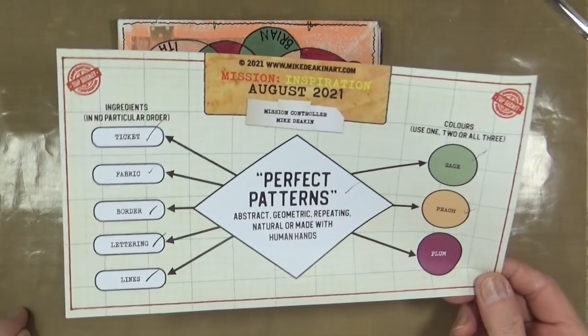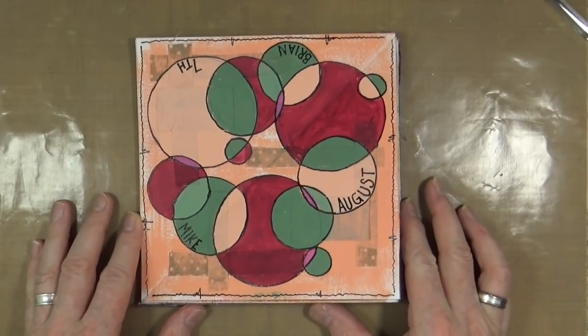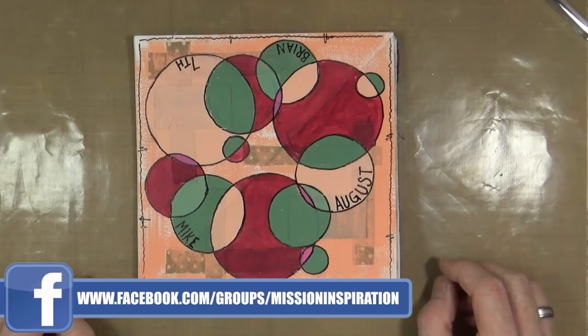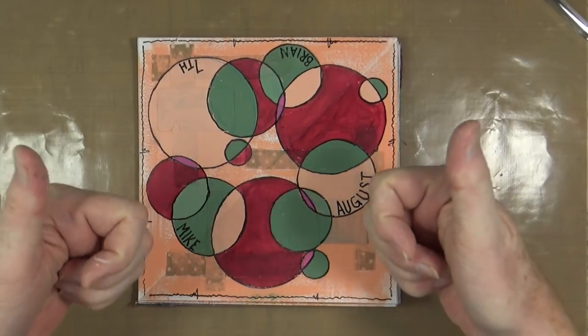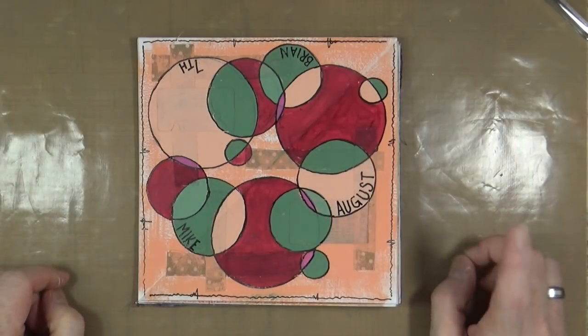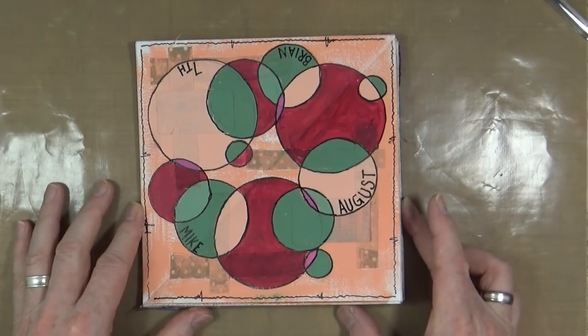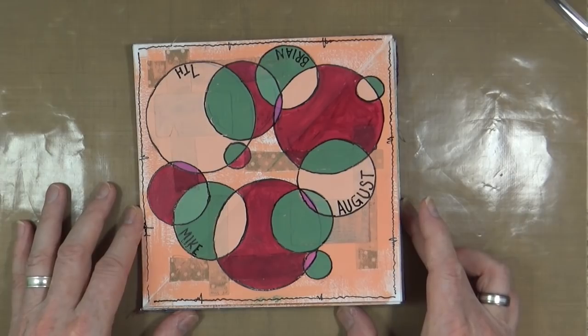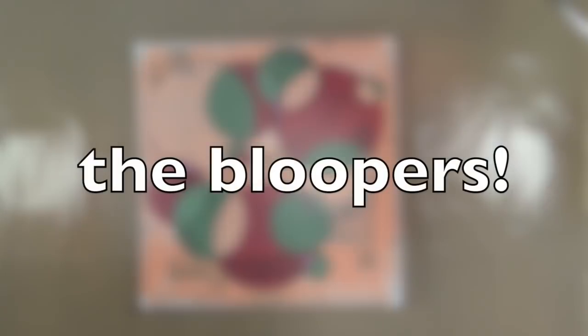We've got tickets, fabric, borders around the circles, lettering - we incorporated the date and the fact we're both in there. We've got lines as part of the border. We've used all three colors. I'd say that's mission accomplished! That's my art journal page for August's mission inspiration incorporating all those prompts. I hope you've enjoyed watching me create this page. Please remember to give the video a thumbs up, share with your friends, and if you haven't subscribed, click the button at the end. That's all from us for now. Bye! We'll see you all later.